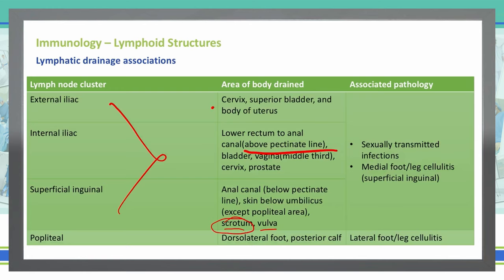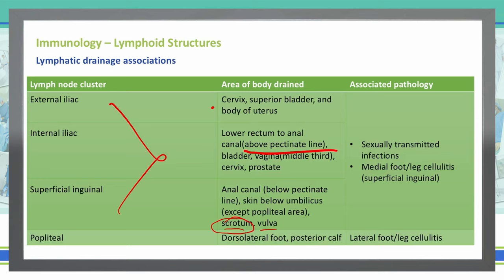The final lymph node cluster is the popliteal, located near the knee. It drains the dorsolateral foot and posterior calf, and its associated pathologies are lateral foot and leg cellulitis.